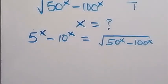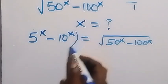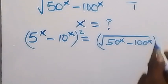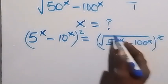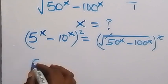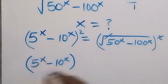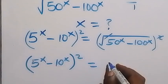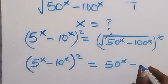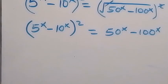From here, let's remove the square root by squaring both sides. The square will cancel the square root on this side, and this side will give us 5 raised to power x minus 10 raised to power x, all squared, equals 50 raised to power x minus 100 raised to power x.